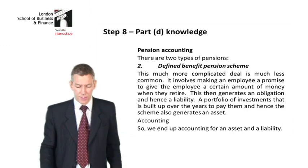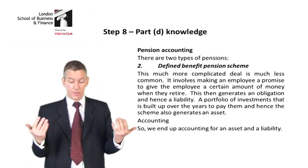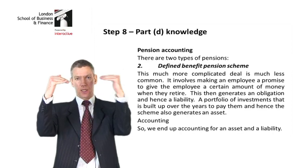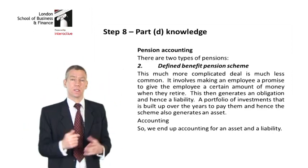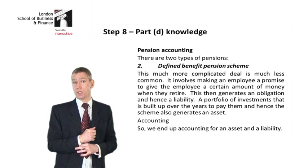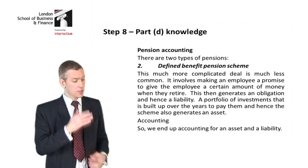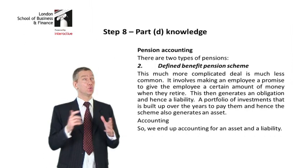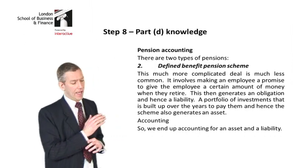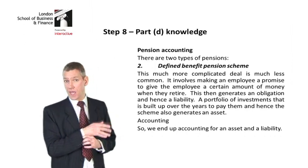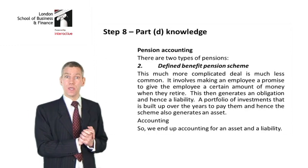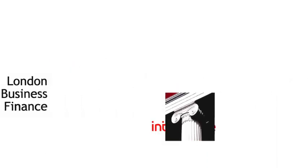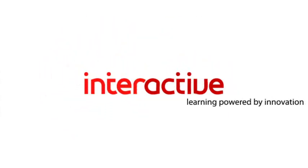Coming back to the accounting — we end up accounting for an asset and a liability, because we have an asset and a liability. That is the pensions accounting knowledge you need to answer Kate Part D. Turn to June 2010, have a look at the question, and see if you can do Part D on your own.